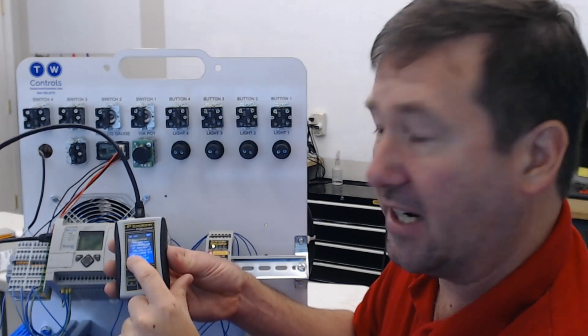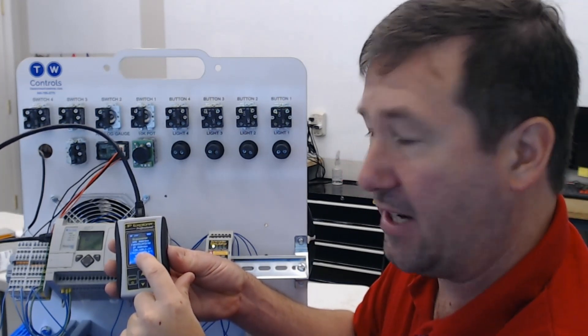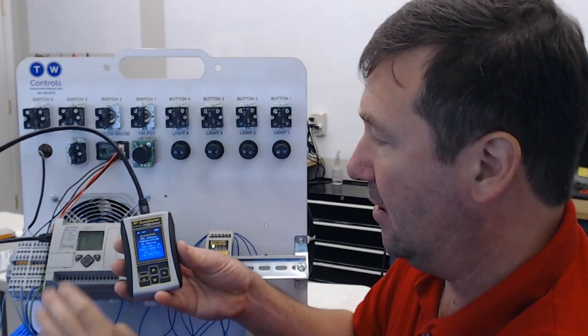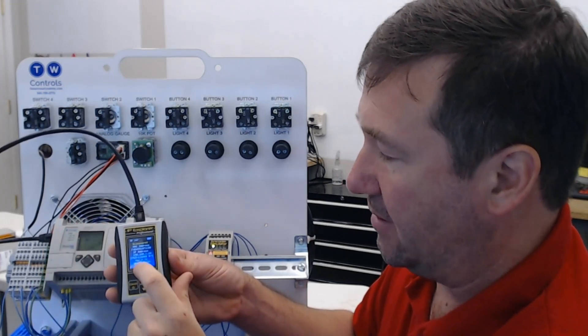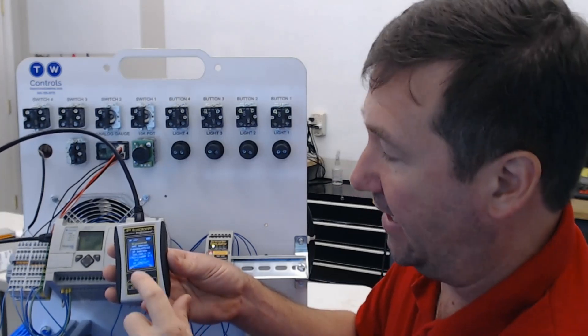Also, we can tell that this is a 1763-L16BBB, which is the part number of this MicroLogix 1100 PLC, and that it's a Series B version 2.6 and its serial number.